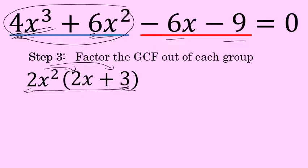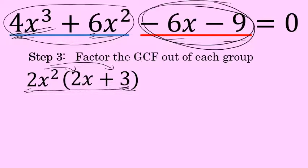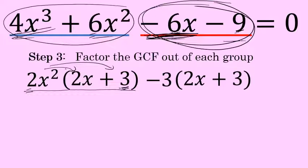Next, we'll factor a common factor out of the second group, negative 6x minus 9. The greatest common factor here is negative 3. If there is a negative in front of the third term, you want to factor that out to the front. Factoring a negative 3 out of those two terms leaves 2x plus 3. Negative 6x divided by negative 3 is 2x, and negative 9 divided by negative 3 is positive 3. So the second group becomes negative 3 times 2x plus 3.